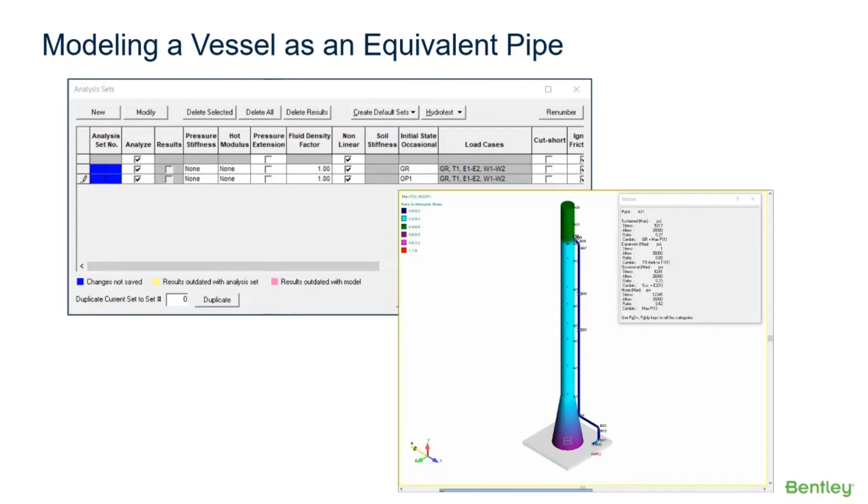Static earthquake and wind loads are included in this model along with gaps and friction on our pipe supports. So a nonlinear analysis is set up here. Two analysis sets are set up to review the occasional results in both the sustained and operating cases.